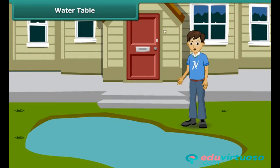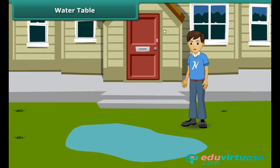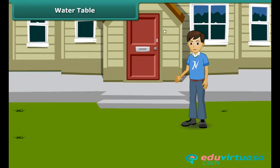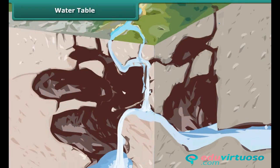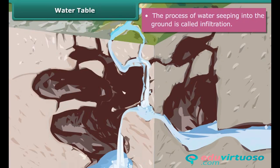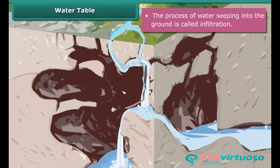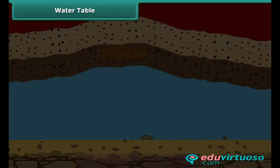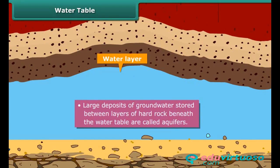After heavy showers, huge puddles form in your locality. A few hours later, the puddles are nowhere to be seen — the water has seeped into the ground. This process of water seeping into the ground is called infiltration, and groundwater gets recharged by this process.